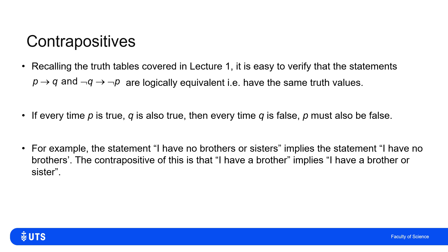The contrapositive involves negating both statements and reversing the direction of implication. The negation of 'I have no brothers' is 'I have a brother' (possibly more than one), and the negation of 'I have no brothers or sisters' is 'I have a brother or sister' (possibly more than one). So the contrapositive is: 'I have a brother implies I have a brother or sister' — just as p implies q, not q implies not p.